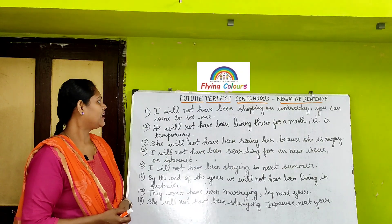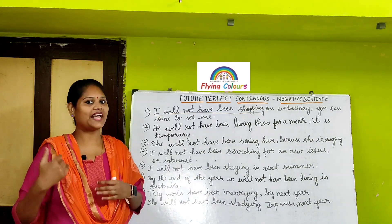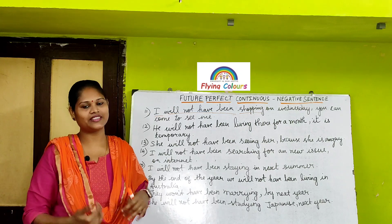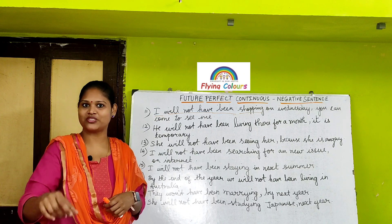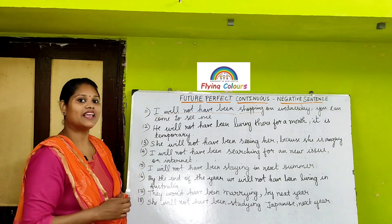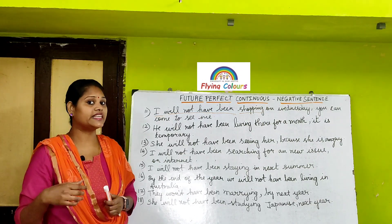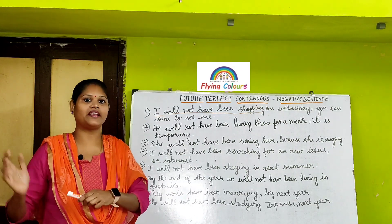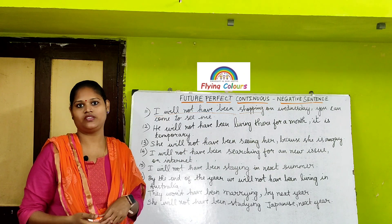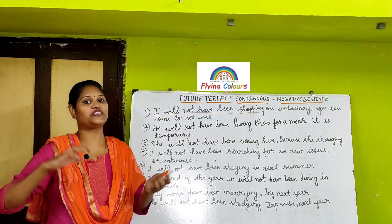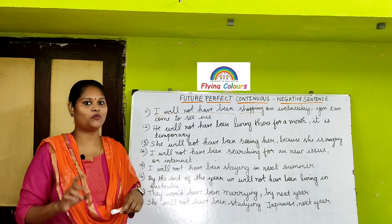I will not have been shopping on Wednesday — you can come to see me. The action shopping had started in the past, continuing in the present, but will not continue on Wednesday — that is the specific duration given. He will not have been living there for a month — it is temporary. The living action started in the past and continues in the present but it won't happen in the future for a duration of one month.